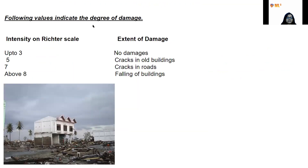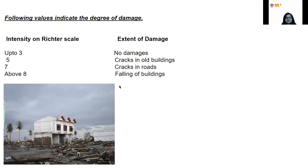The following values indicate the degree of damage by intensity on the Richter scale: up to 3 — no damage; 5 — cracks in old buildings; 7 — cracks in newer buildings; above 8 — falling of buildings.